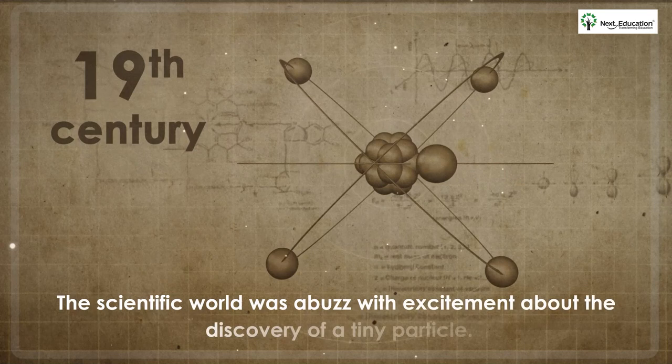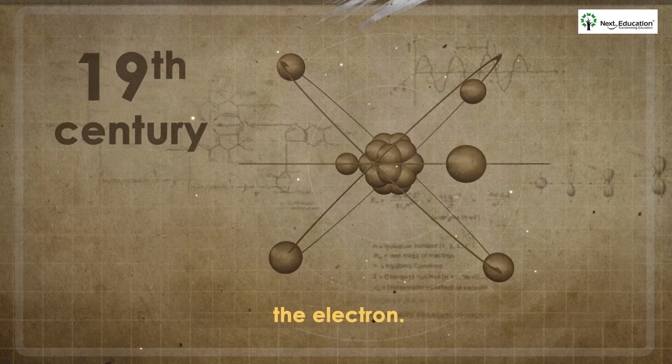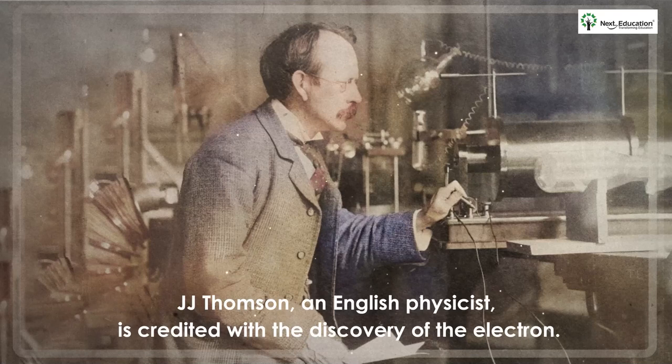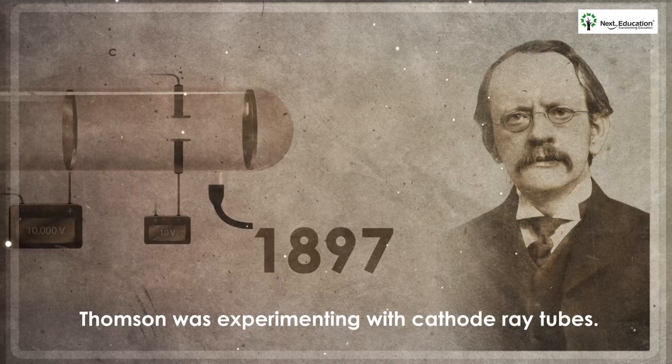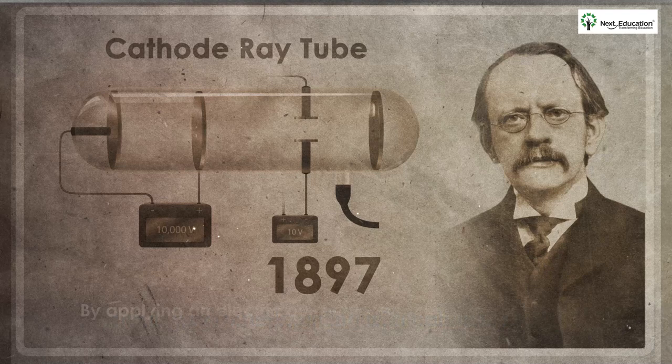In the late 19th century, the scientific world was abuzz with excitement about the discovery of a tiny particle that would change the course of modern physics: the electron. It was JJ Thomson, an English physicist, who is credited with the discovery of the electron in 1897. Thomson was experimenting with cathode ray tubes, which were widely used in scientific research at the time.